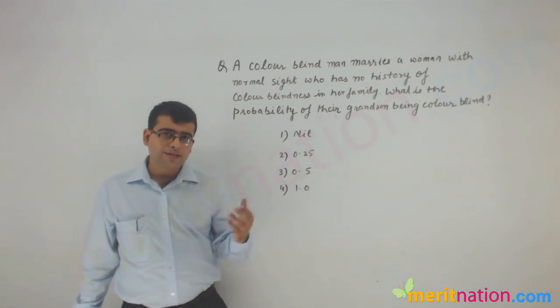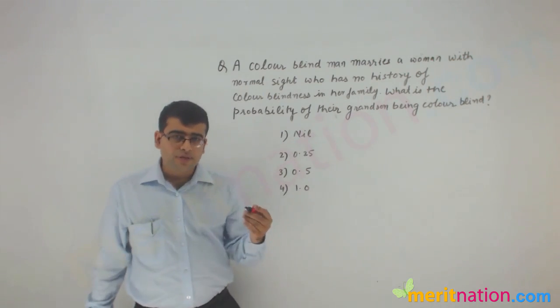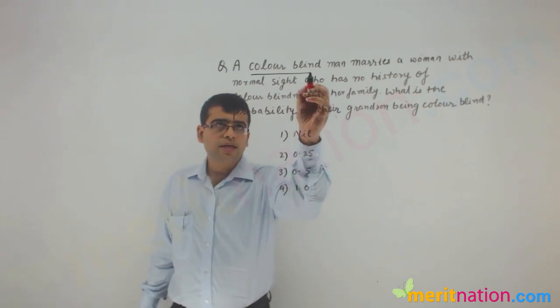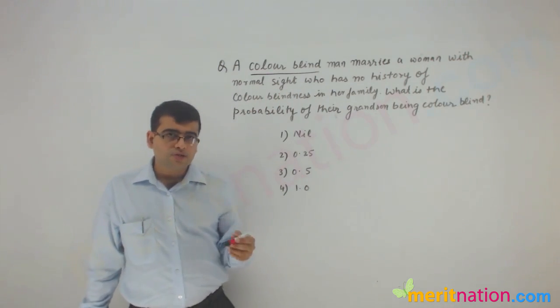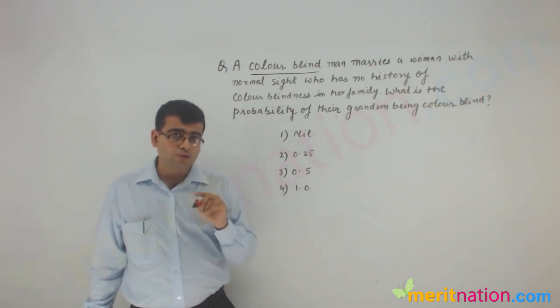Now let us try to answer this question. Take step by step, try to solve this question step by step. So the question is saying about colorblindness, which is actually a sex-linked disorder, and it is related to the X chromosome.